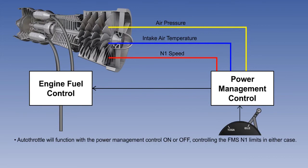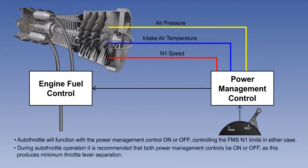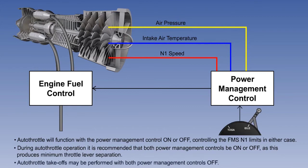This value will be maintained during the climb to keep a constant thrust setting without throttle lever adjustment. The autothrottle will function normally with the power management control on or off, with the autothrottle computer controlling the flight management system's N1 limits in either case. During autothrottle operation, it is recommended that power management controls be both on or both off, as this produces minimum throttle lever separation. Autothrottle takeoffs may be performed with both power management controls off.